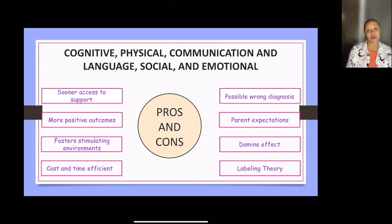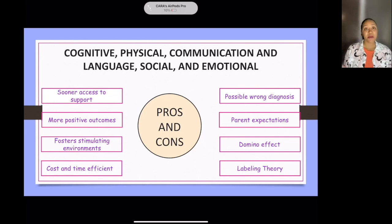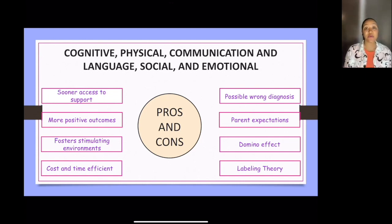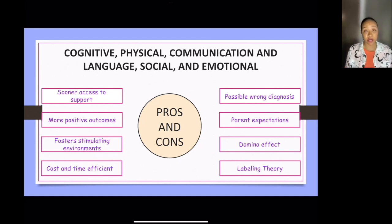The cons of early identification — which don't outweigh the pros — include the possibility of a wrong diagnosis. For example, if you're worried about a language delay and you go in when your child is four because they're not talking, the doctor might say your child has a language processing disorder, when really they're just learning two or four languages right now. Give them a moment to catch up.